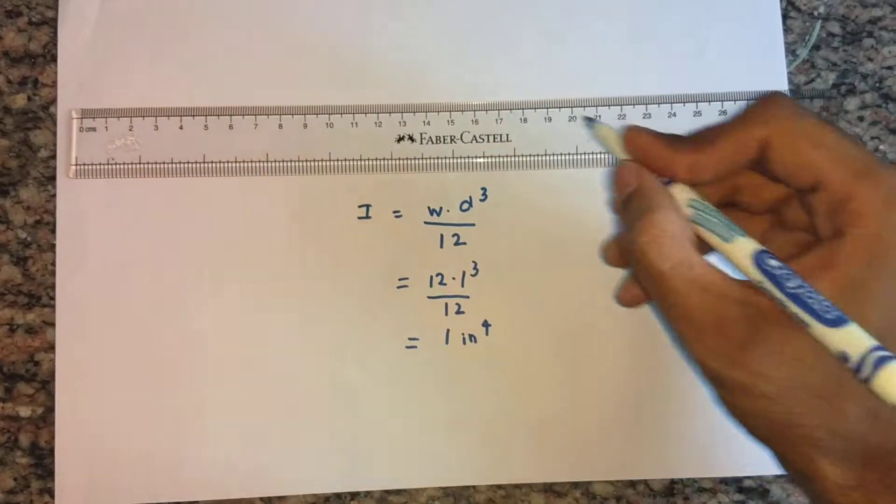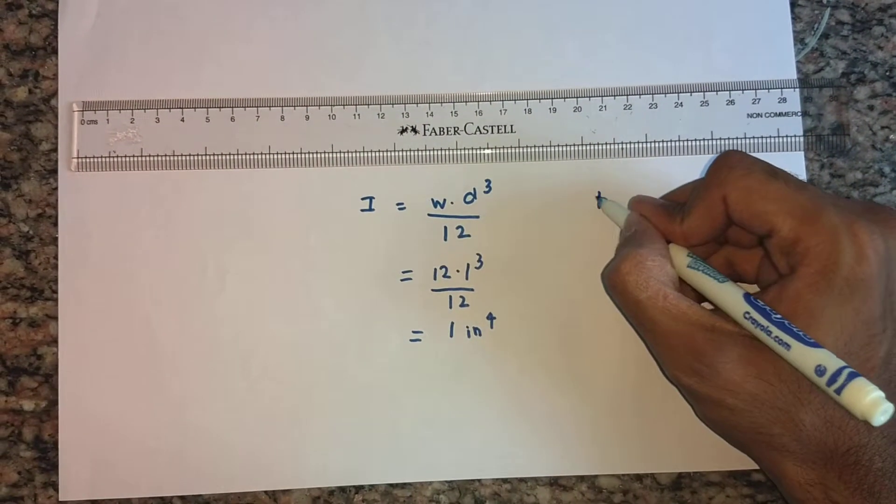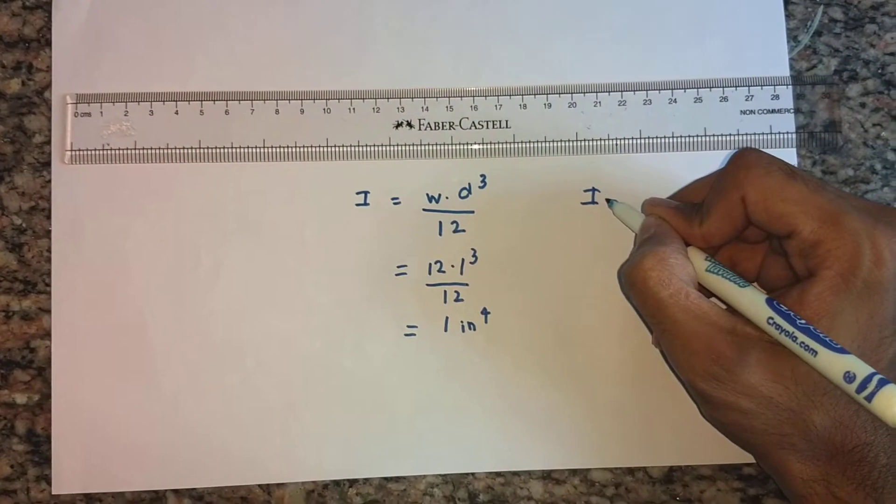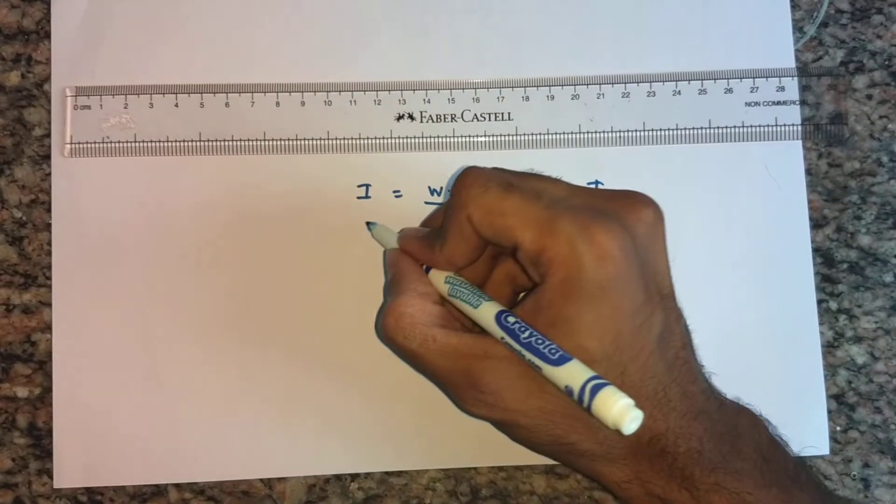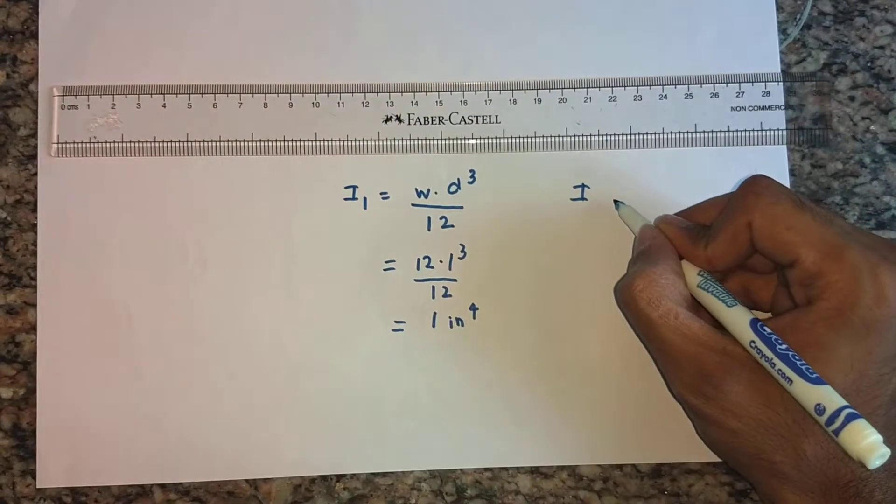Now, in case 2, what happens is the W and D swap each other. So let's call this I1, and this is I2.